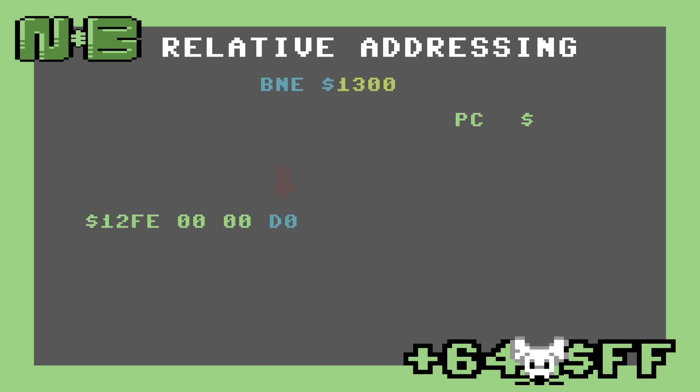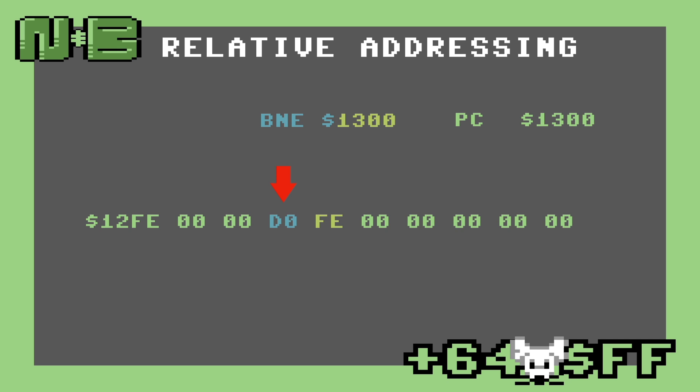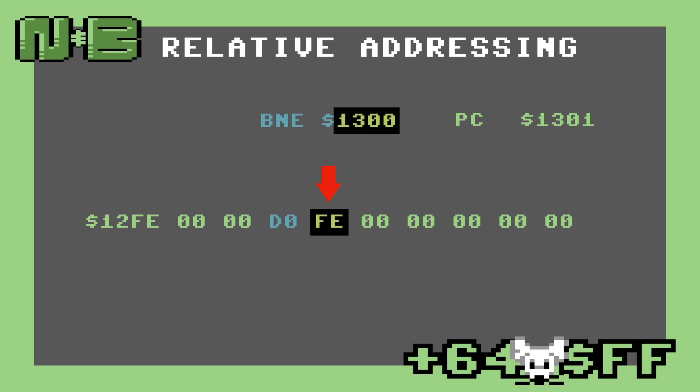Let's look at this visually, with the 6502's hardwired program counter behavior in mind. The first thing the 6502 does is load the opcode into an internal register and execute it. Immediately afterward, it increments the program counter. In the next cycle, it loads the operand into a temporary register like the opcode before it. In this case, it loads the relative address FE, which is actually negative two in decimal. The program counter is hardwired to increment after a fetch, so for one cycle before the branch occurs, the program counter is actually set to 1302.